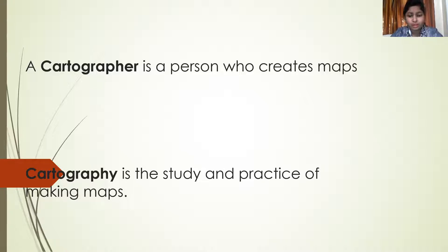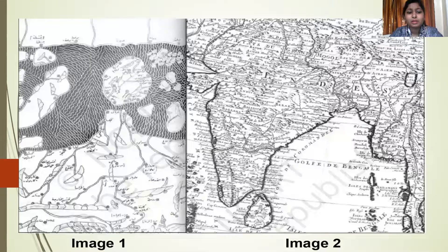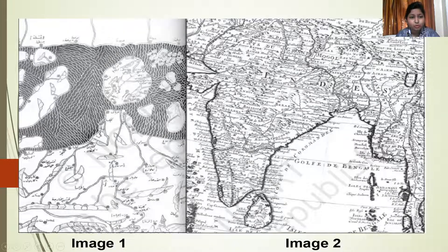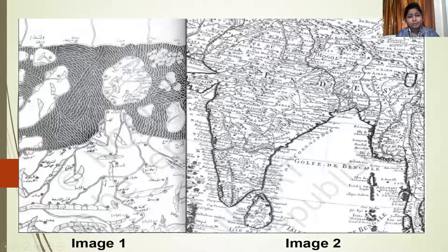We are going to study about two images in Chapter 1 on the very first page of your textbook — Map 1 and Map 2. When we see image one and image two, the thing that stands out is that image one is not at all familiar to us, whereas in image two we are somewhere able to locate the structure of the Indian map.